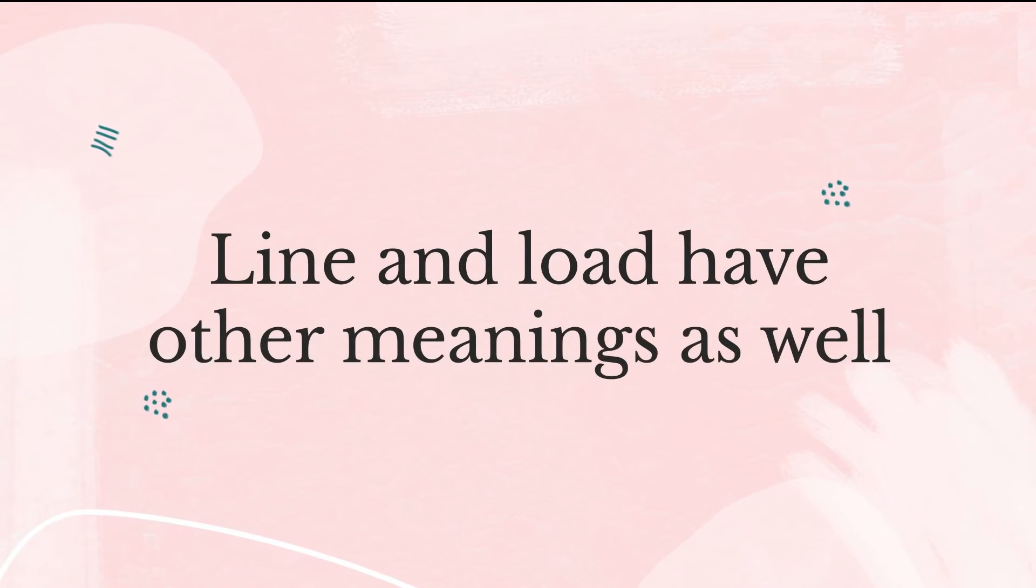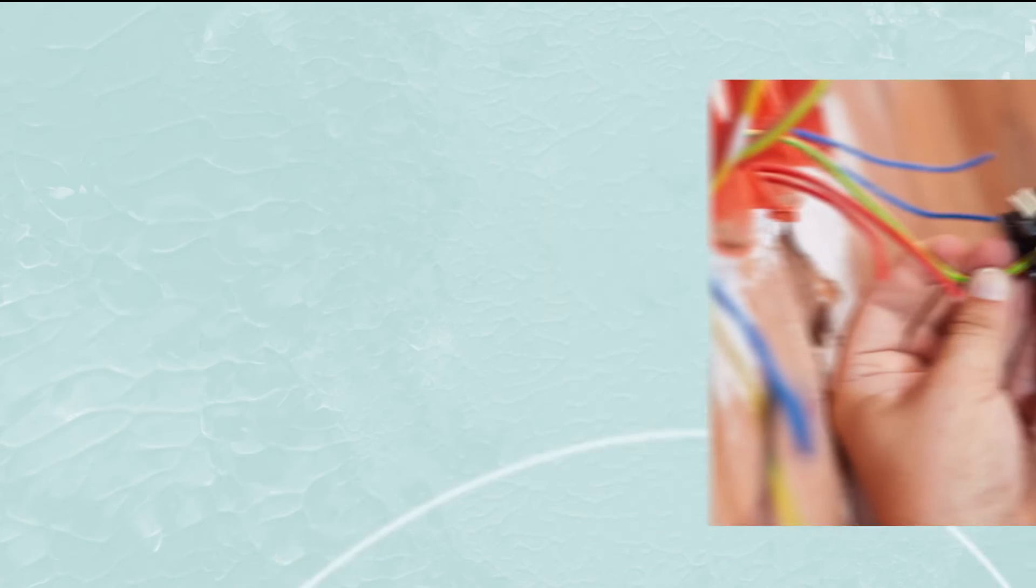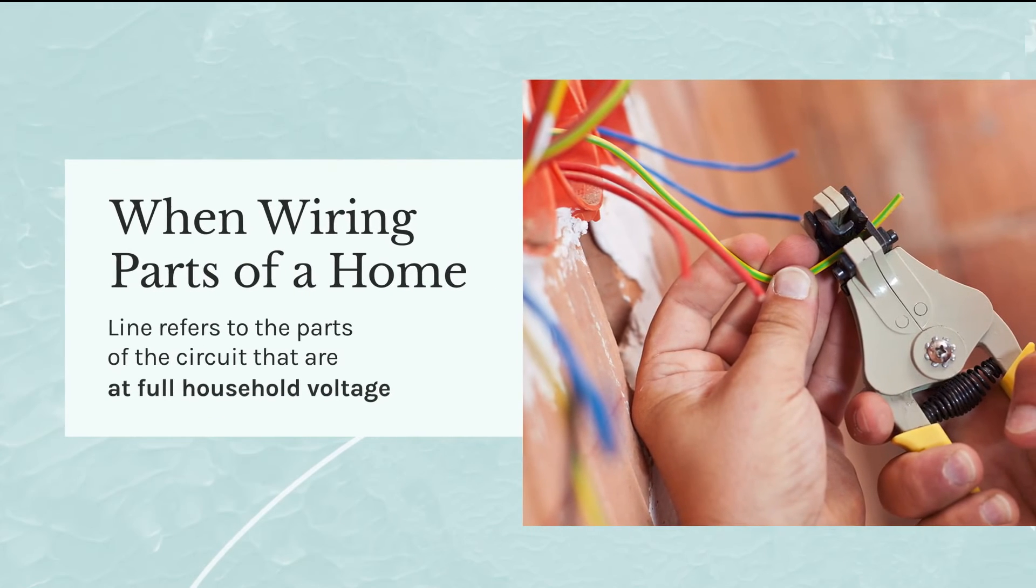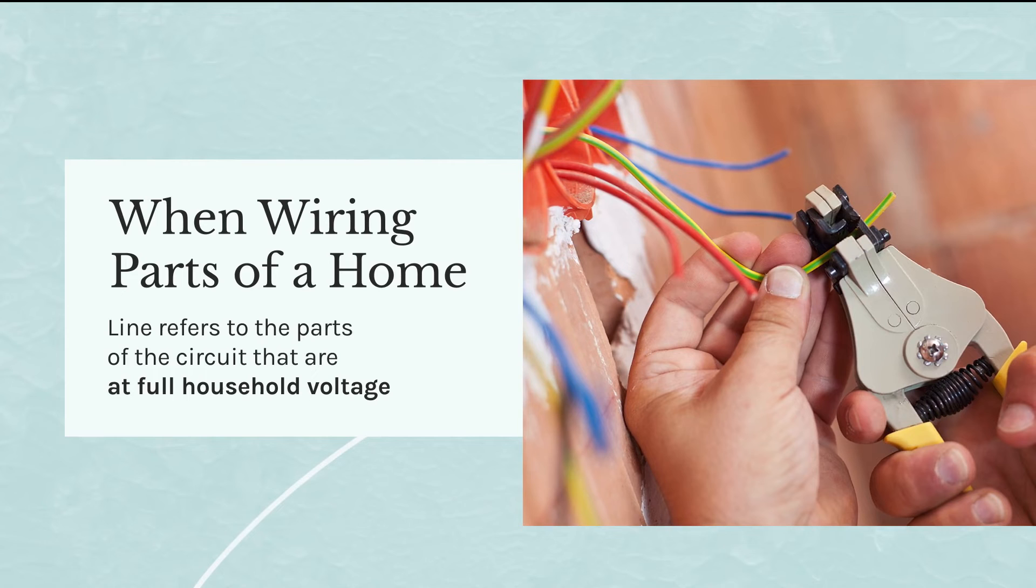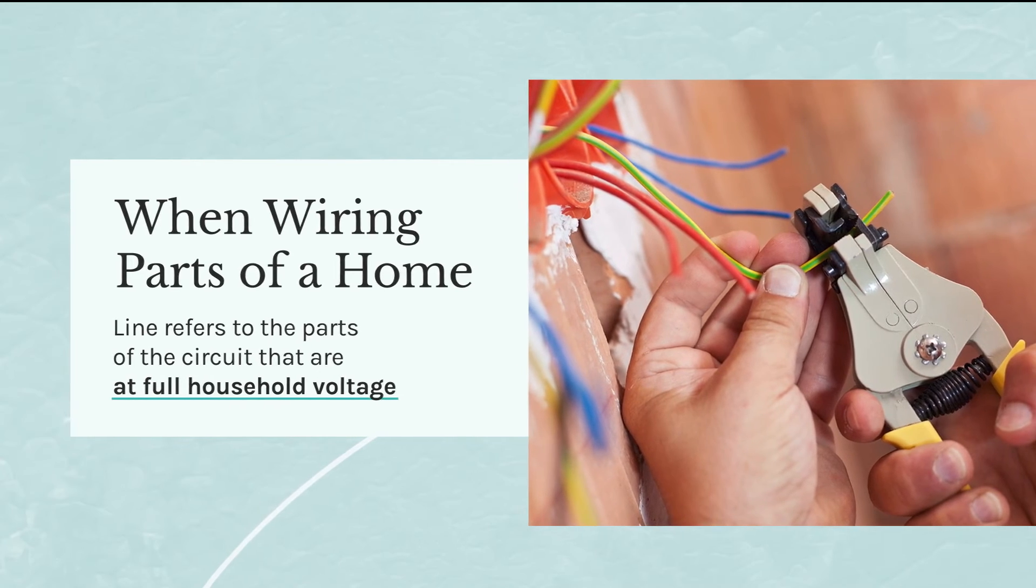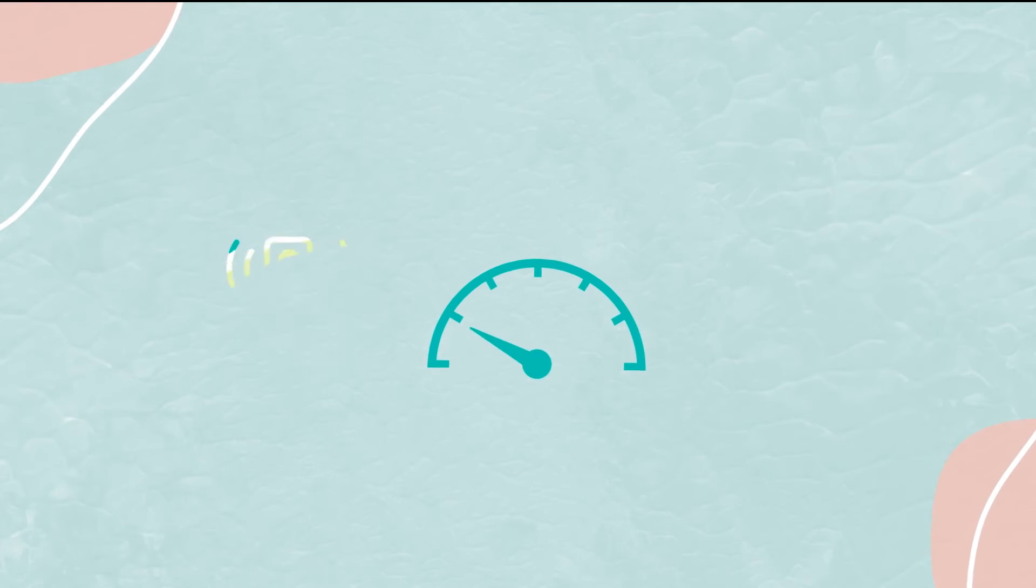Line and load have other meanings as well. When wiring parts of a home, line refers to the parts of the circuit that are at full household voltage. This helps distinguish them from low voltage wiring like for a doorbell or garden lights.